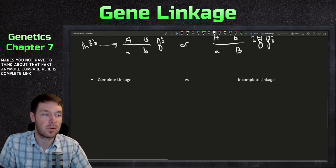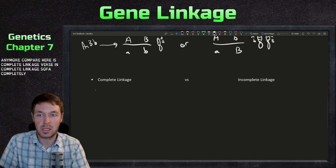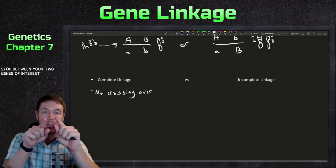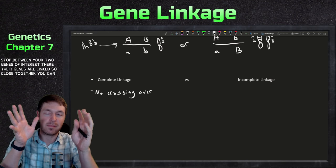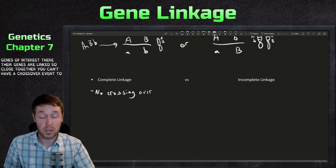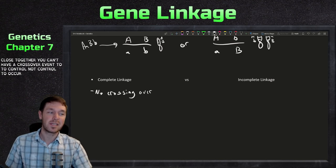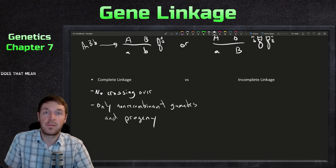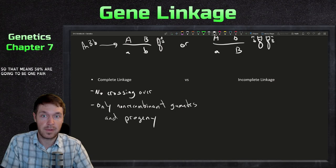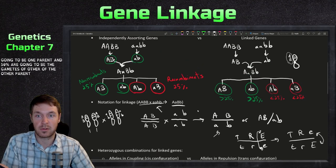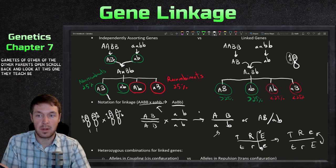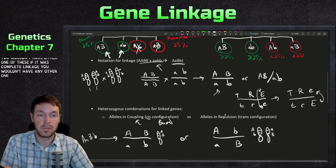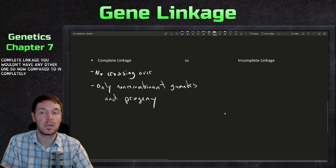Now let's compare complete linkage versus incomplete linkage. With complete linkage, genes are so very close together that no crossing over can occur between them. Because of that, only non-recombinant gametes and progeny are produced - 50% look like one parent and 50% look like the other parent. You wouldn't see any recombinant classes at all with complete linkage.